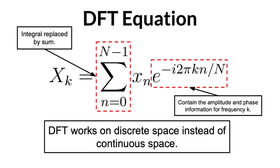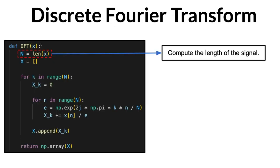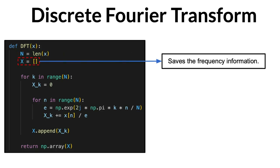Now let's try to implement the discrete Fourier transform in Python. First of all, we compute the uppercase N, which is the length of our signal, and declare the variable uppercase X, which will hold all the frequency information within our signal.